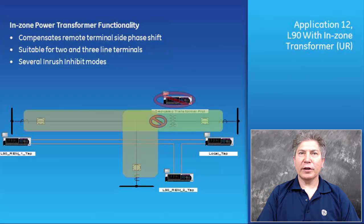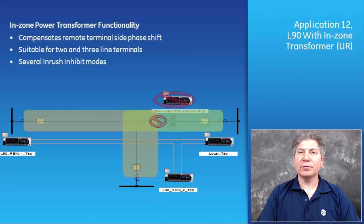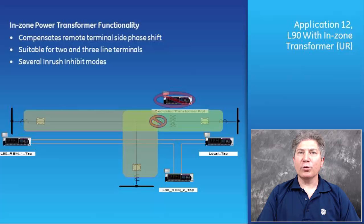Application 12: L90 with in-zone transformer protection. The in-zone transformer software option enables line differential devices to support a power transformer between line terminals. This option accommodates an in-zone transformer with magnitude and phase compensation and second harmonic inhibit during transformer magnetization and inrush. The winding angle selection specifies the phase shift of the remote terminal side winding. Only one in-zone transformer is allowed for both two-terminal and three-terminal applications. This option reduces the number of CT banks required by eliminating the need for dedicated transformer protection.